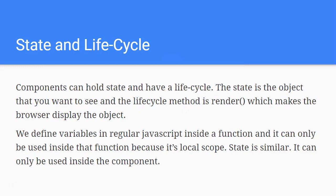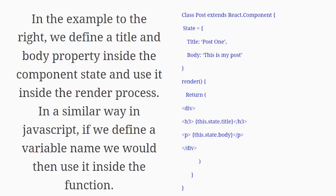Thinking about state — in regular JavaScript you define variables inside a function and they can only be used inside that function because of local scope rather than global scope. State is similar: it can only be used inside the component. In this example, we define a title and body property inside the component state, then use render to display it in the browser.